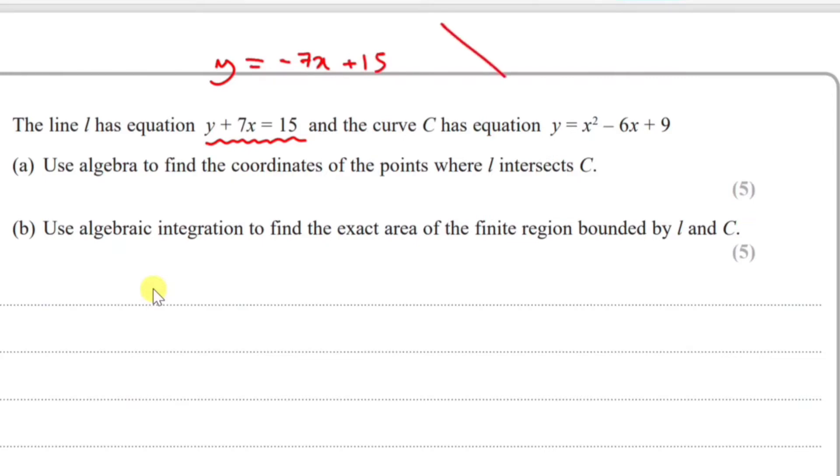I know this is actually a downward line because it has a negative gradient. And this one is a quadratic, so it's a U shape.